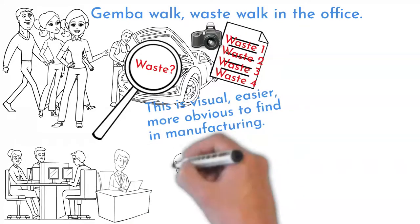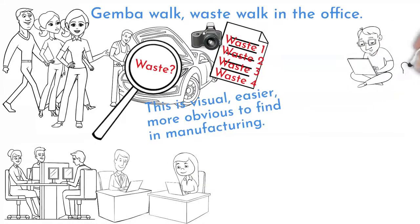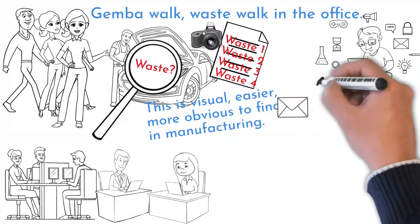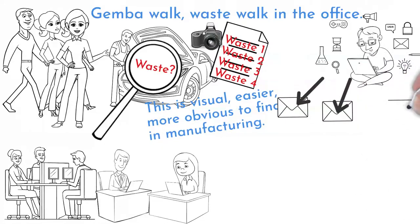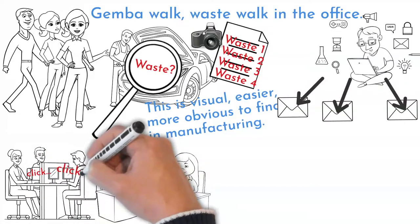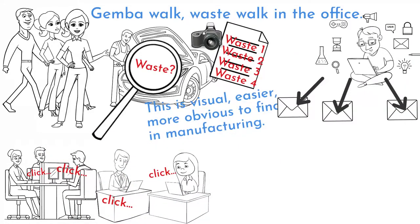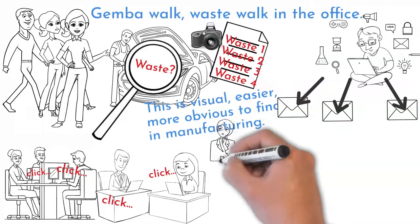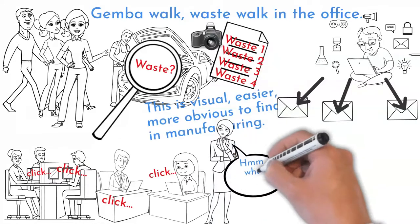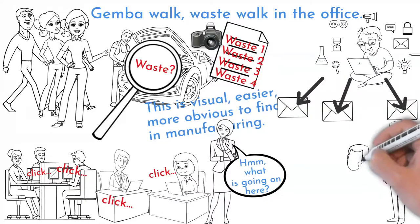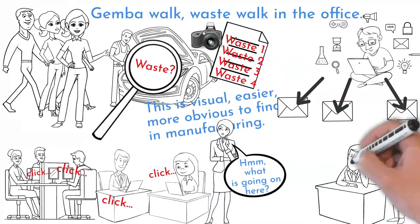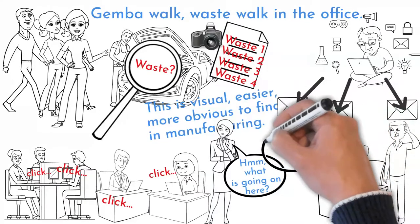There are many office processes. It is not so obvious to see flow there — it is usually some sort of information going through department to department, computer to computer. People do not move very much, just clicking the mouse or writing something on the keyboard. It is very hard, or even impossible, to see what is going on in each step. But there is dissatisfaction at the process end — blame, finger pointing, and frustration.